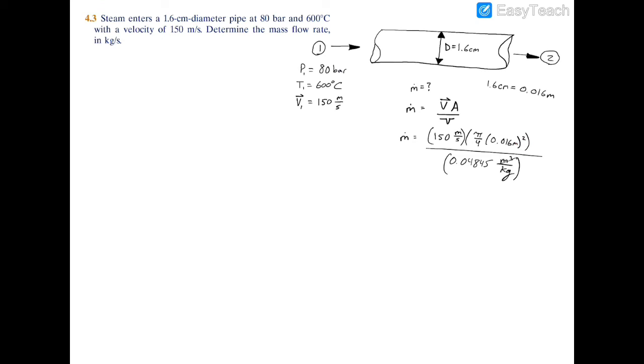The meters cubed cancel out, and you're left with kilograms in the denominator and seconds in the denominator, which leaves you with kilograms per second.